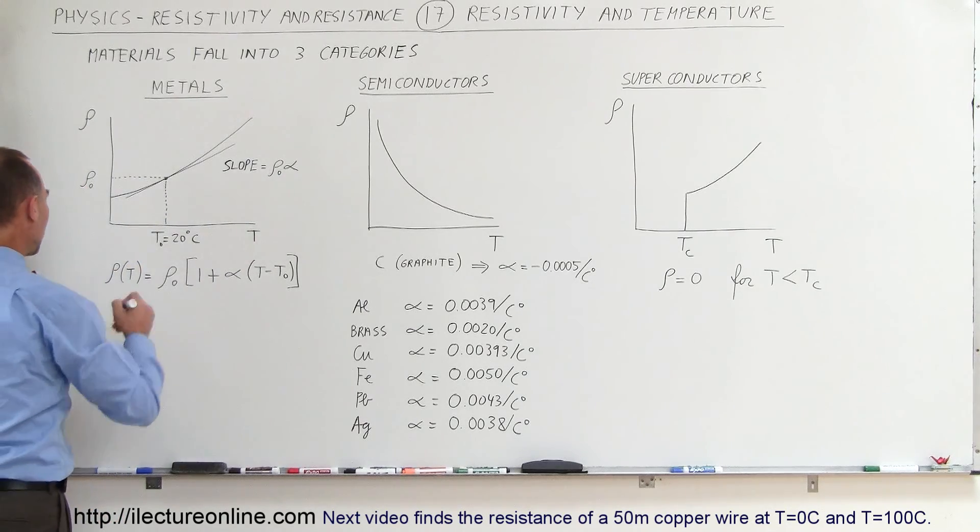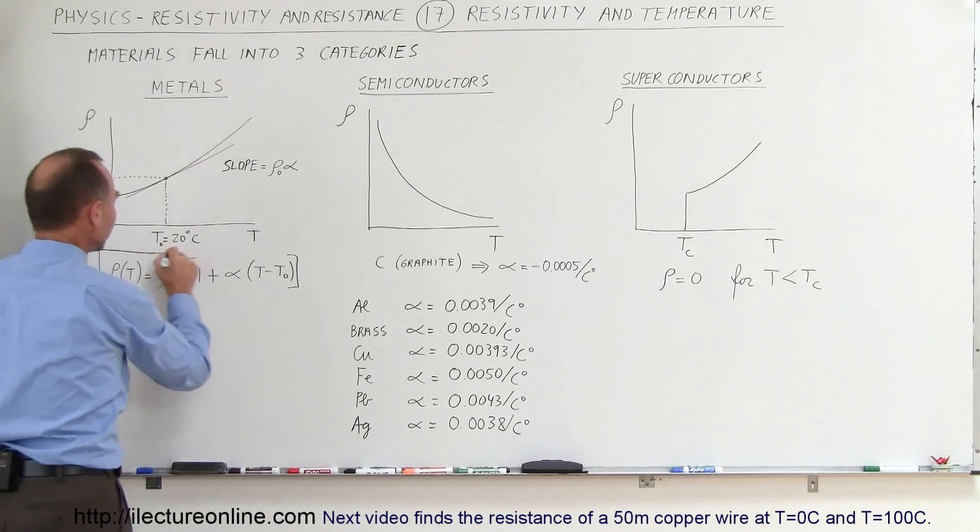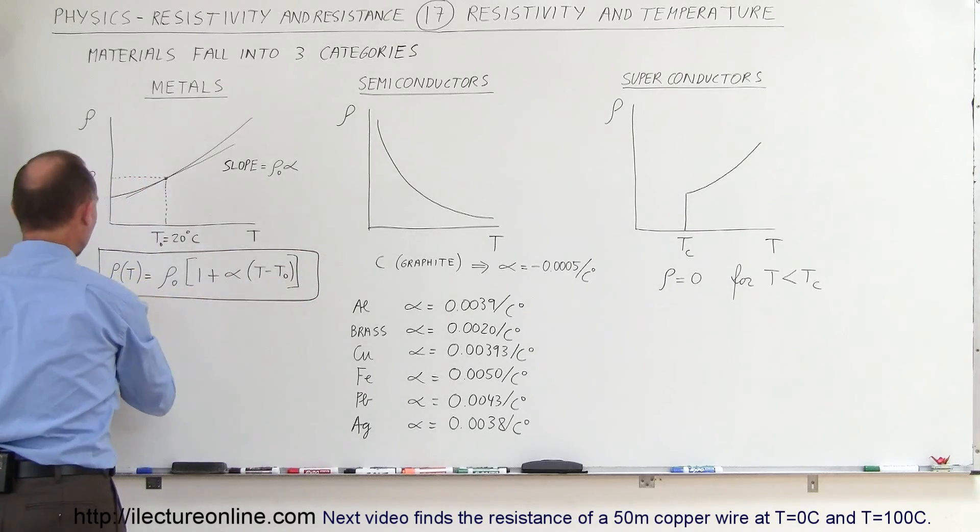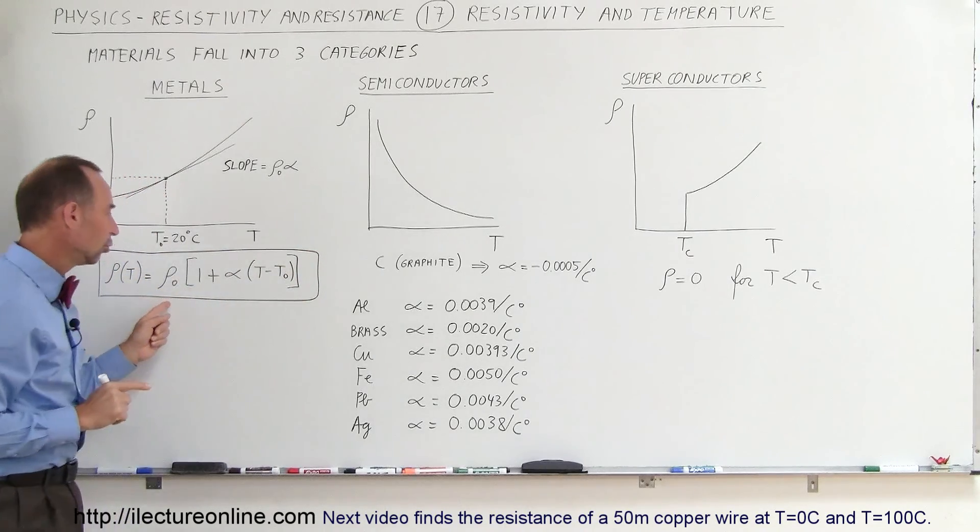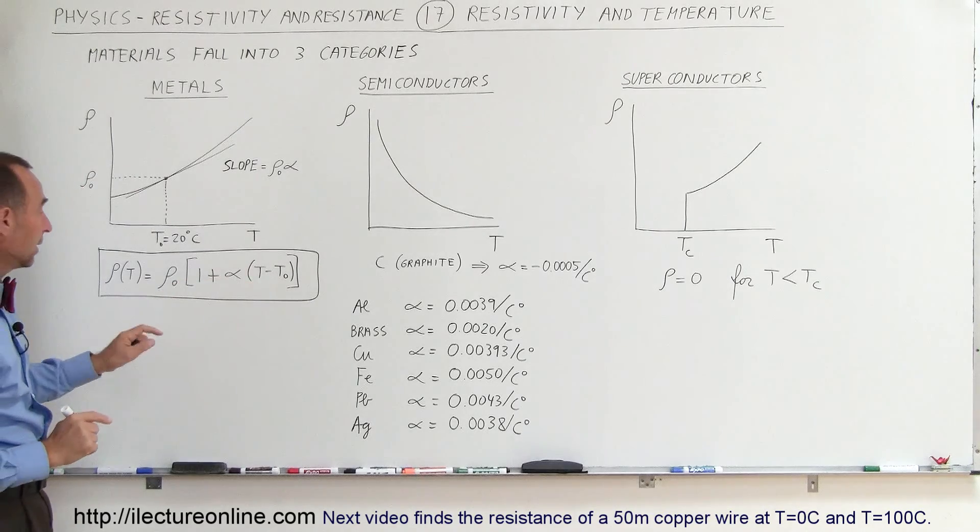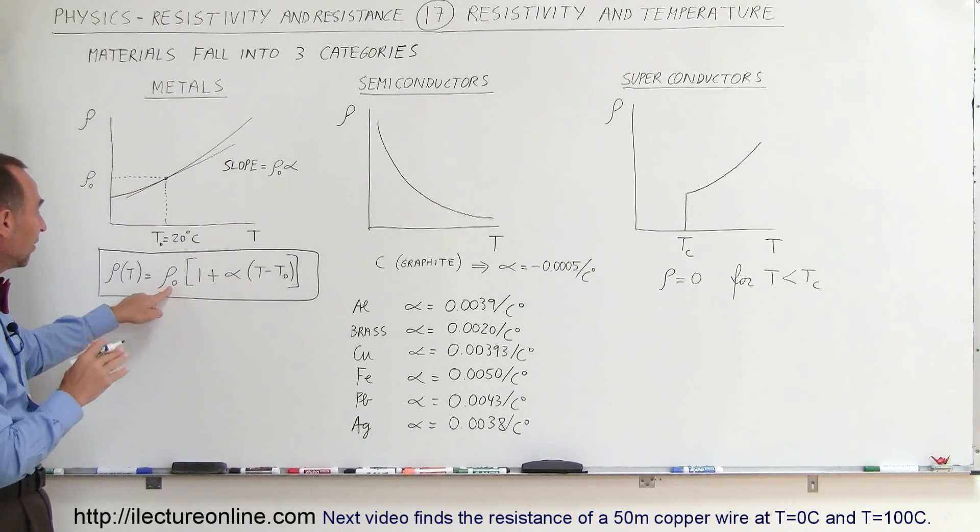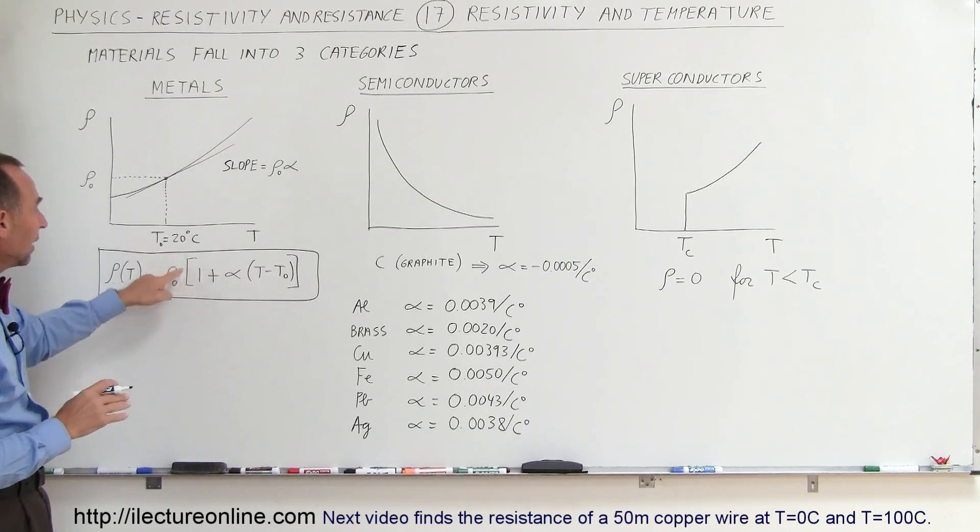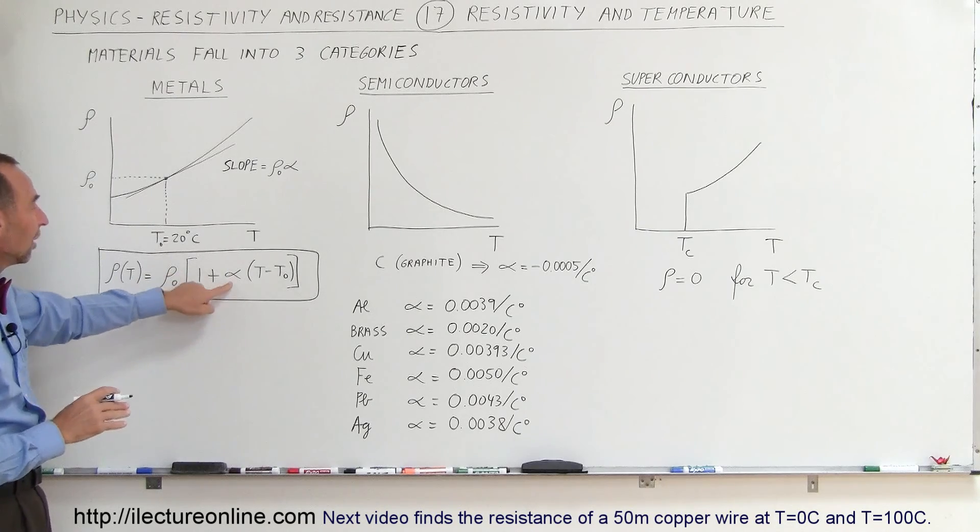Here's the equation that relates the resistivity of a material as a function of temperature to the changing temperature. We have the resistivity at 20 degrees centigrade, and then we multiply times one plus what we call the temperature coefficient.